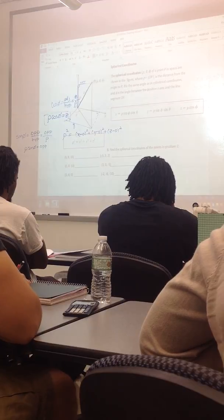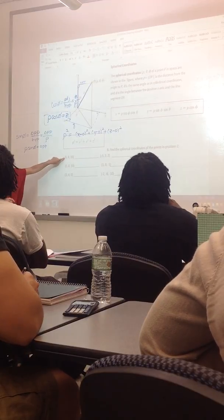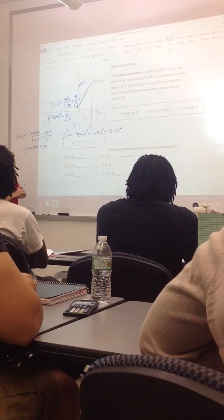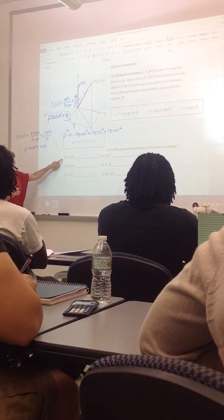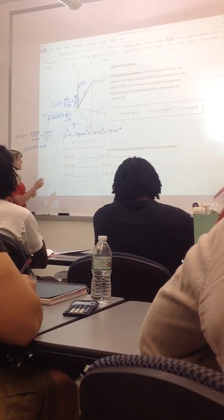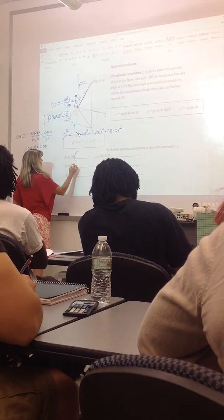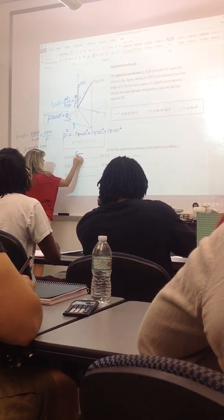All right, so starting with this point, the rho is the distance of the point from the origin, and I think we did already find that. It was the square root of 200, right?